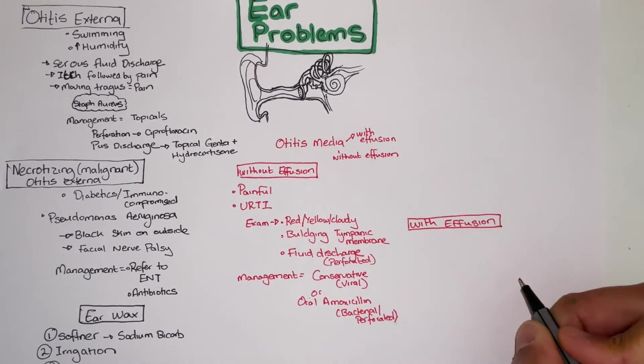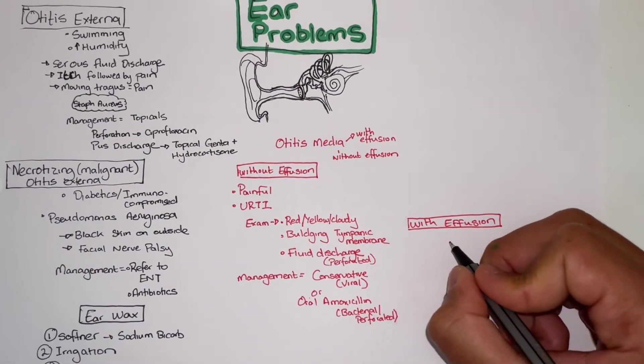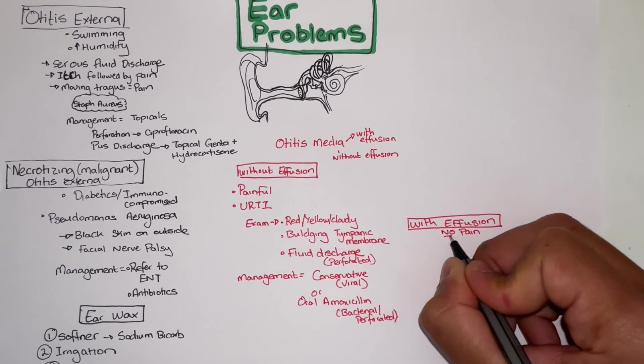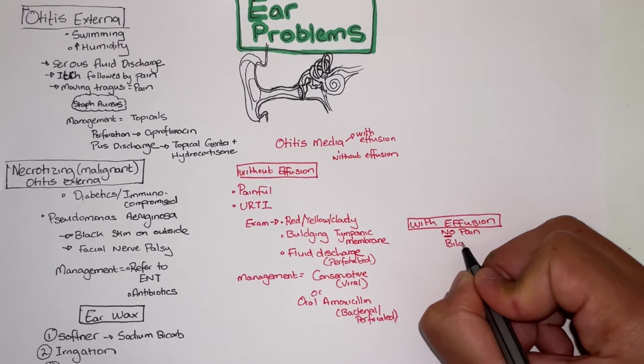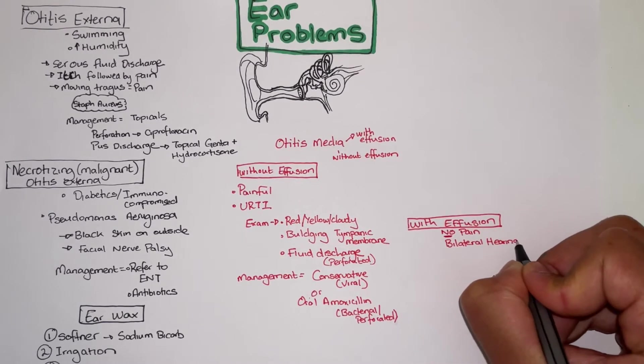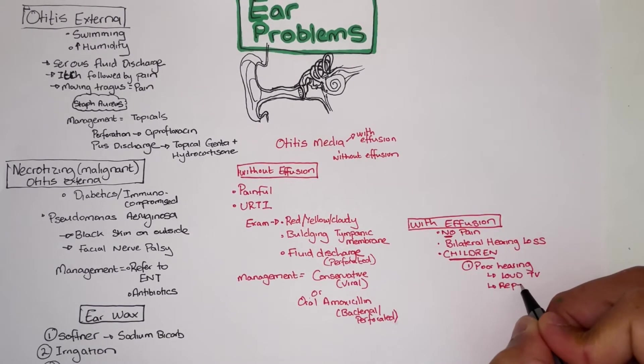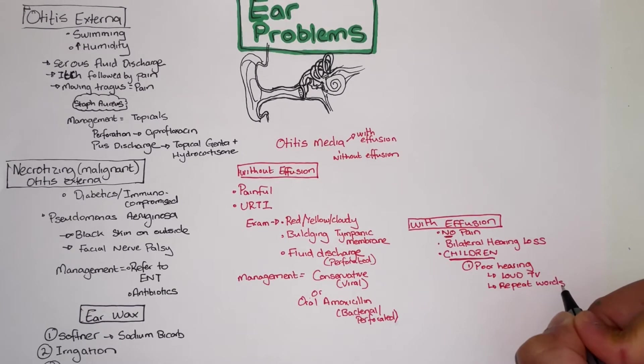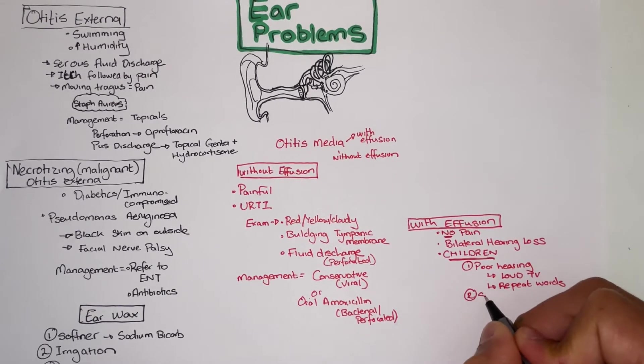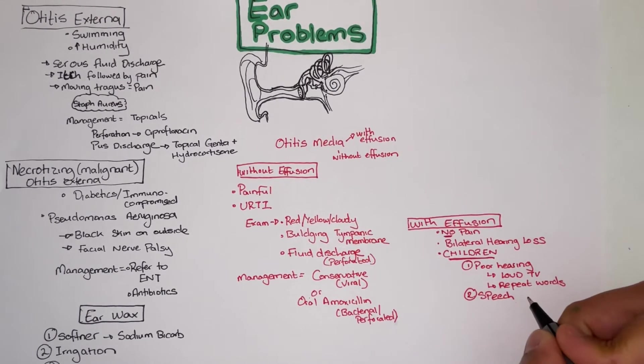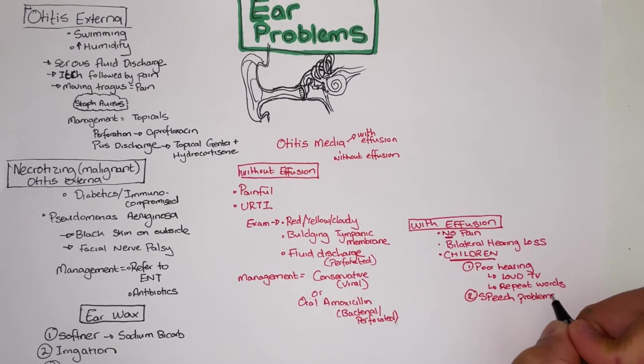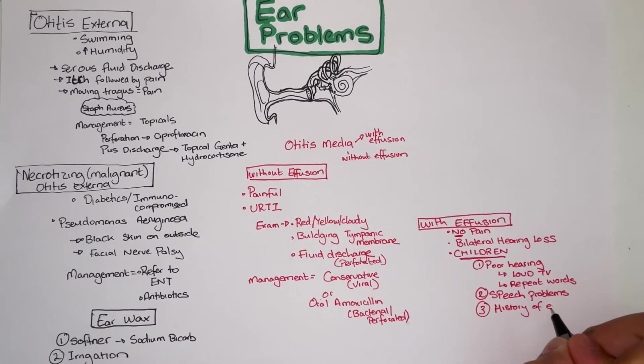Otitis media with effusion is painless with bilateral hearing loss. Common scenarios that this can present as especially in the exams are children with poor hearing and their parents complain they watch TV really loud or they have to repeat words to them. Two, children with speech problems and three, children with the history of enlarged adenoids.